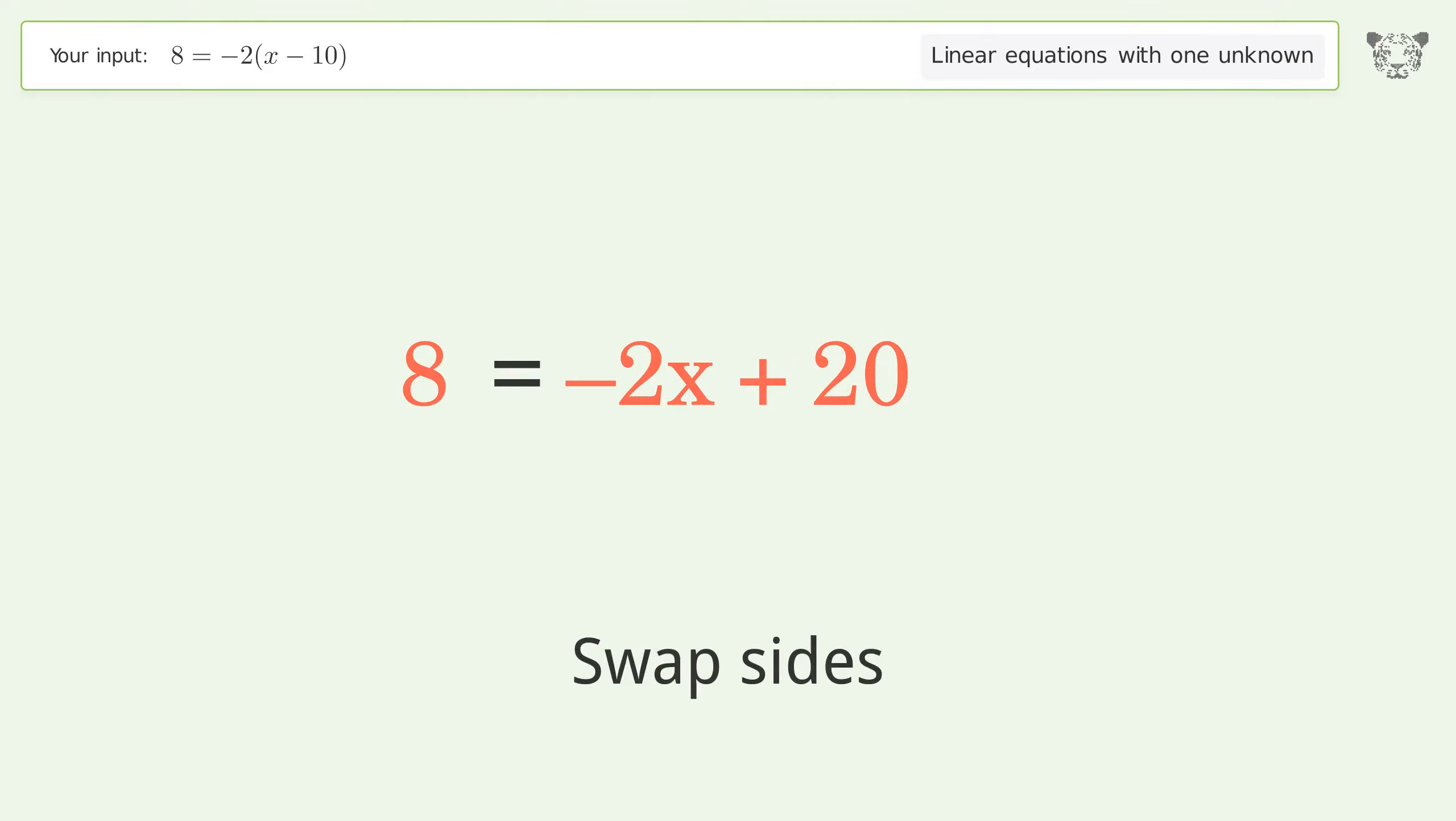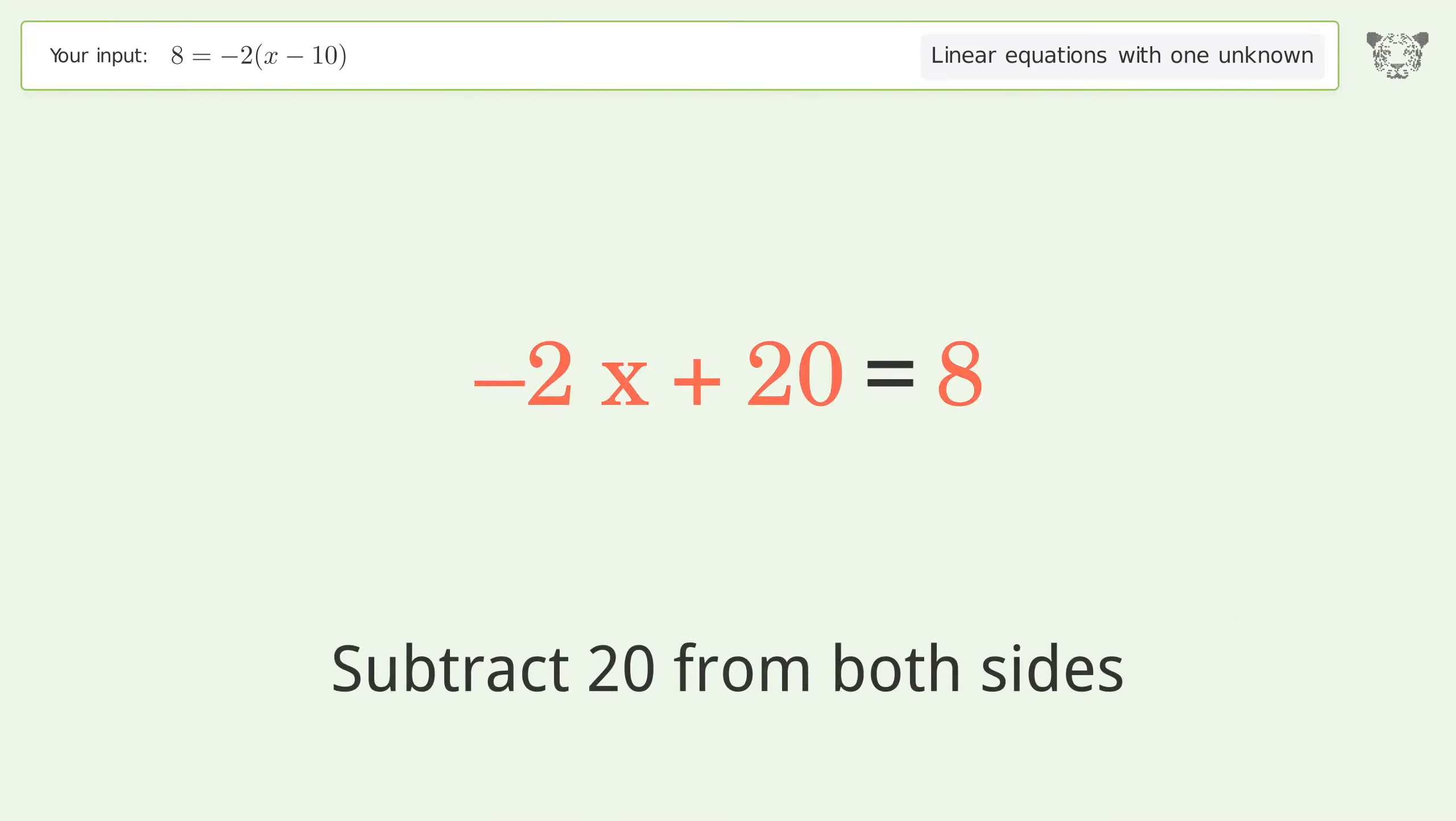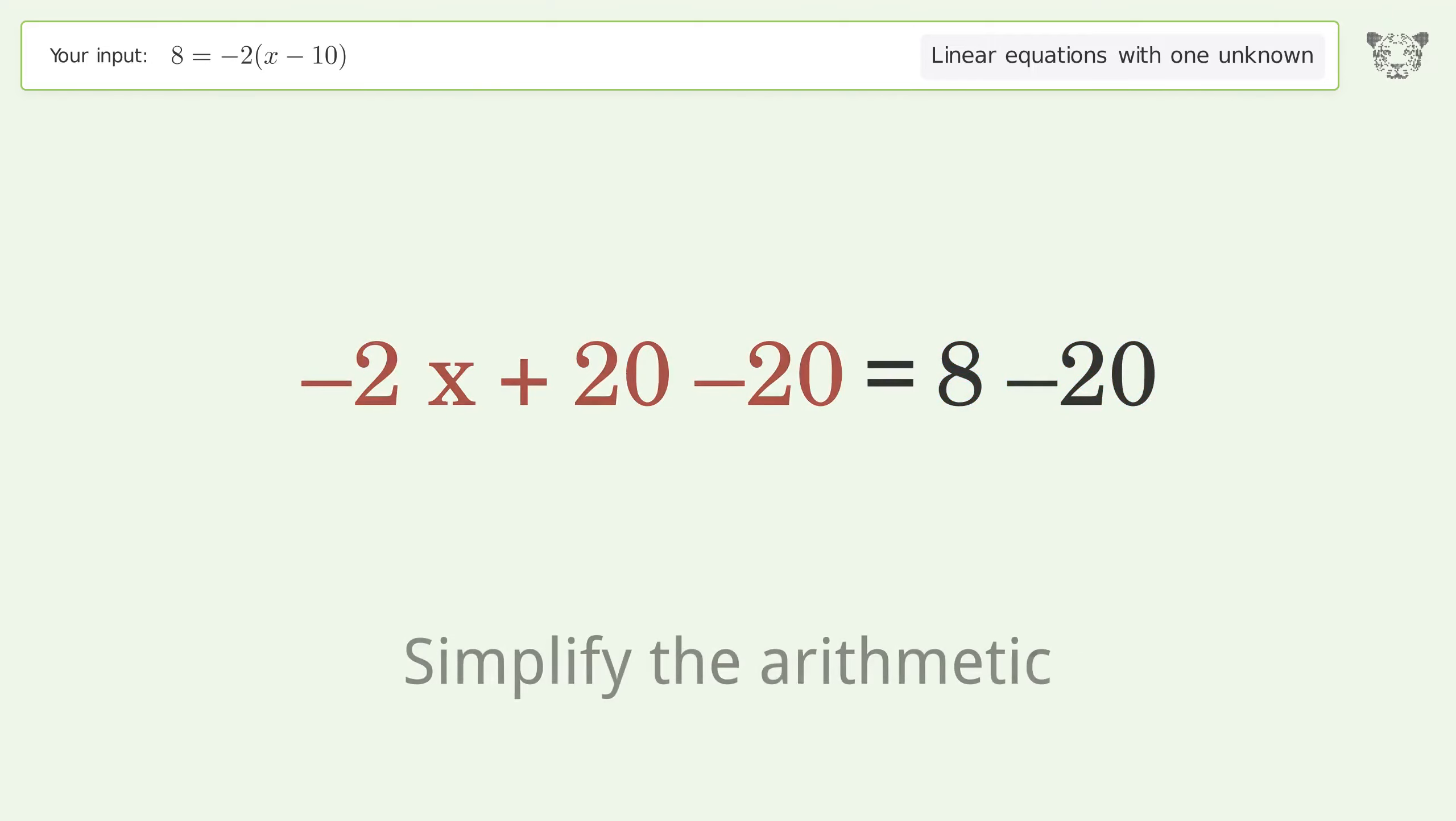Swap sides. Group all constants on the right side of the equation. Subtract 20 from both sides. Simplify the arithmetic.